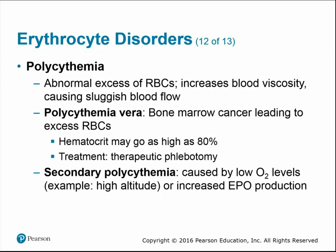Polycythemia is an abnormal excess of red blood cells that increases blood viscosity, making blood flow more sluggish. Polycythemia vera is a bone marrow cancer that leads to excess red blood cell production; hematocrit may reach as high as 80%, as the cancer overstimulates hematopoietic stem cells. Secondary polycythemia can be caused by low oxygen levels or increased erythropoietin production.